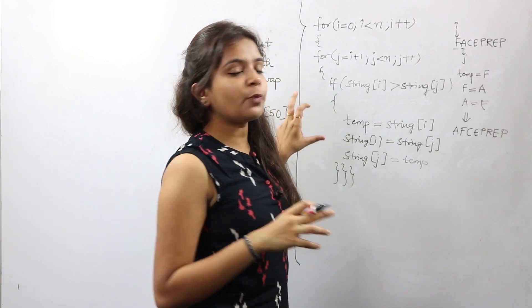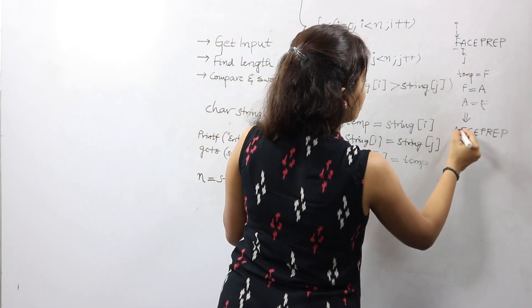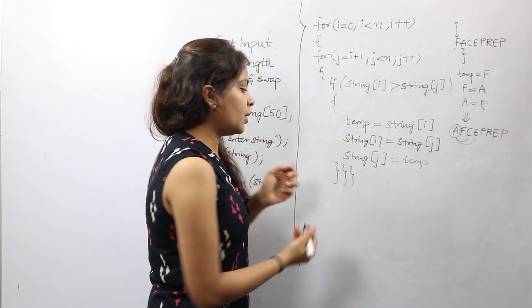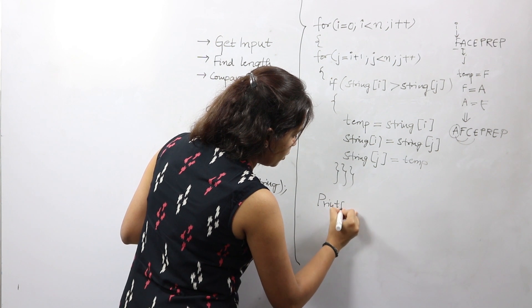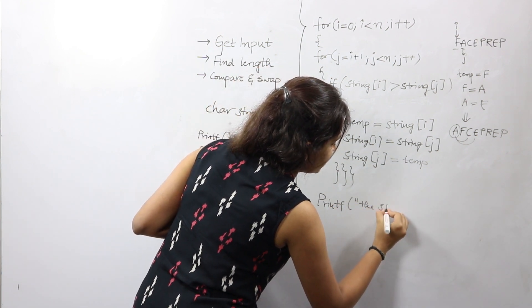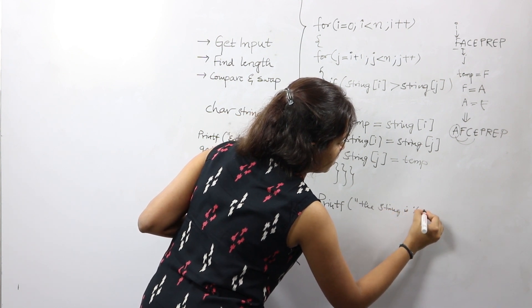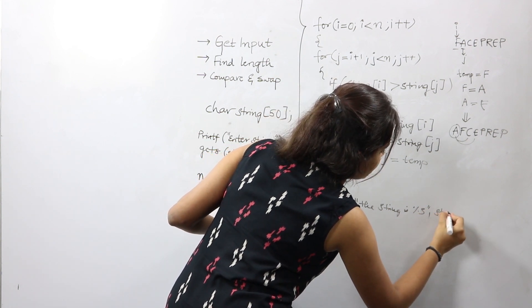This is just one iteration that we wrote. Similarly, now A will get compared with C, E, and so on. Once all the iterations are over we would just go ahead and print the string: printf("%s", string).